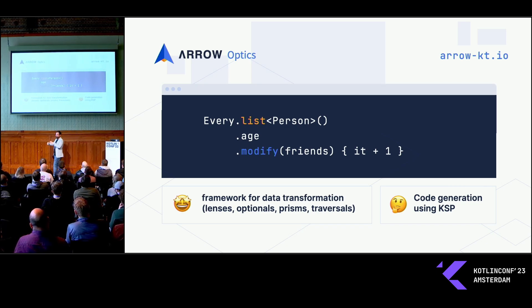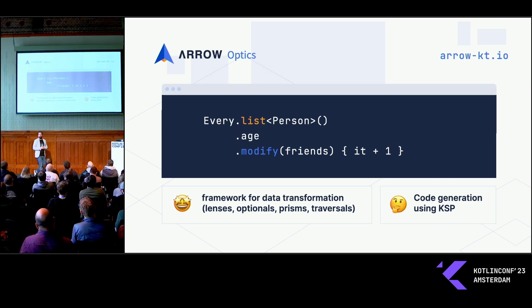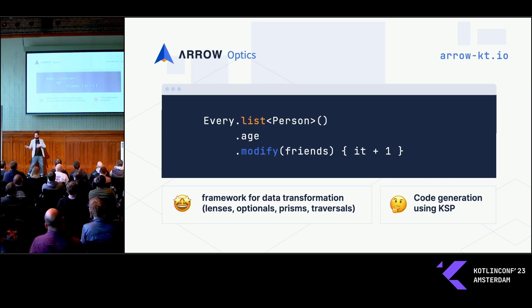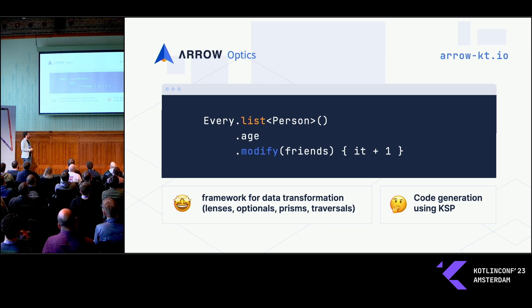I can just use the same modify thing I had before, but now operating on a list of friends, using this thing called every.list — which is the mutable reference that refers to each element within a list. By doing this, you get a bigger framework. You need to know the framework, but once you get it, you get quite some power.